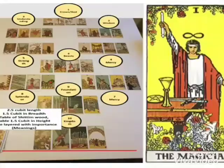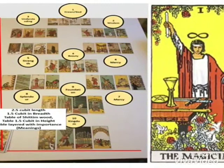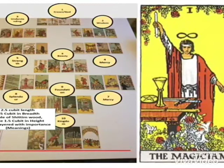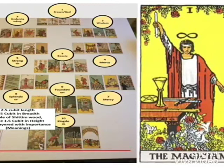When we lay out the cards on the table in a Kabbalistic Tree of Life, we end up having two and a half cubits in length, one and a half cubits in breadth. The table was made of shittim wood and is one and a half cubits from the ground — the same as the menorah. The word Zohab would actually mean 'of importance' and not gold.